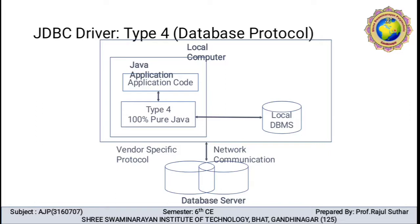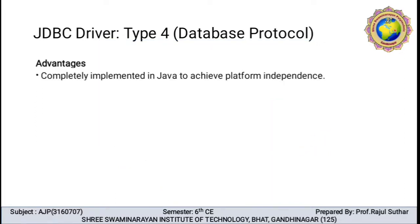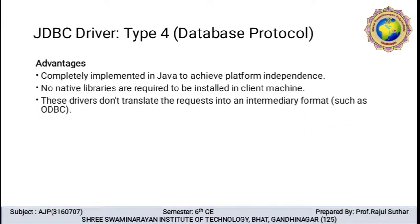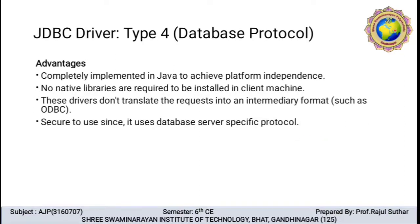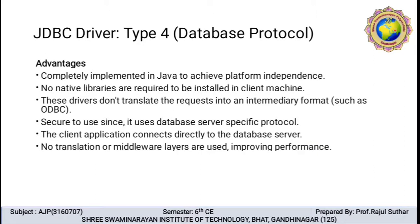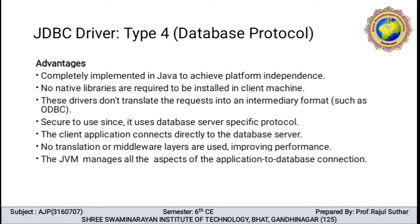Type 4 driver uses the Java networking libraries to directly communicate with the database server. It is completely implemented in Java to achieve platform independence. No native libraries are required to be installed on the client machine. The driver does not translate the request into an intermediary format such as ODBC. It is secure to use since it uses a database-server-specific protocol. The client application connects directly to the database server, with no translation or middleware layer, improving performance. The Java Virtual Machine manages all aspects of the application-to-database connection.